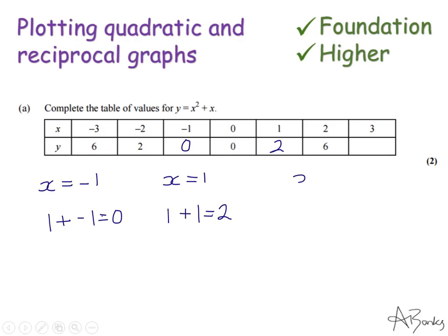And then when x is 3, x squared will be 3 squared, which is 9. Add x, which is 3, which gives me 12. So that's my table completed.